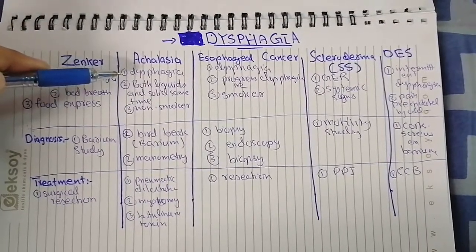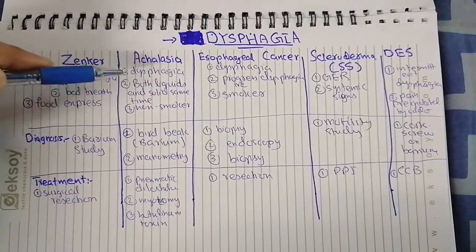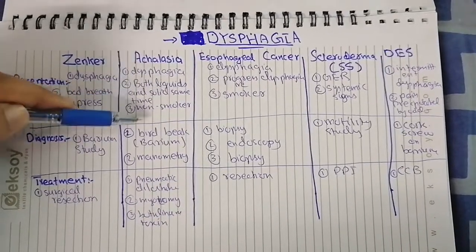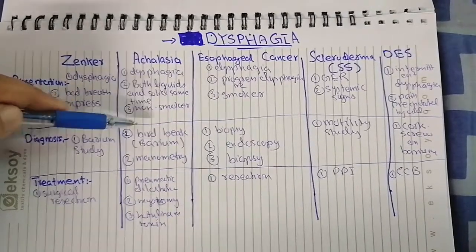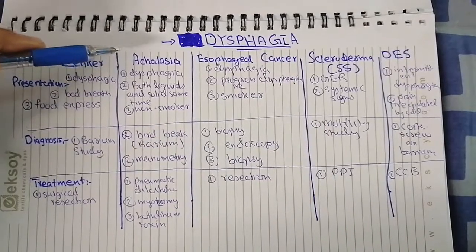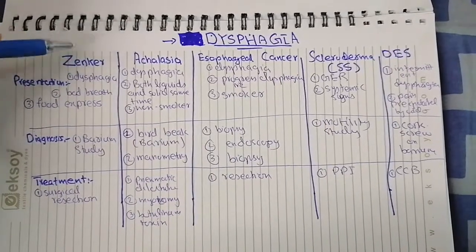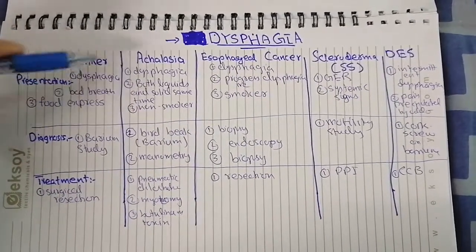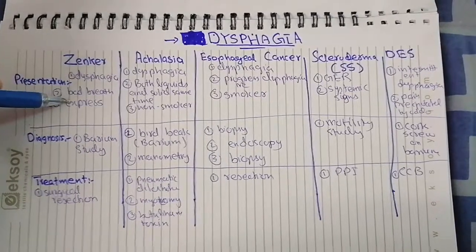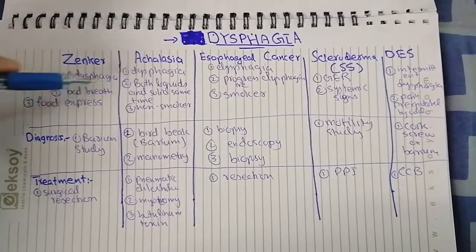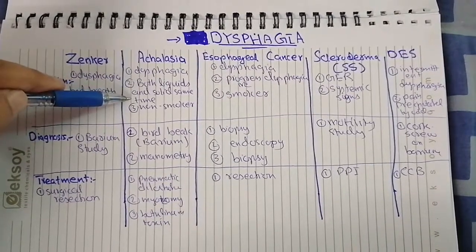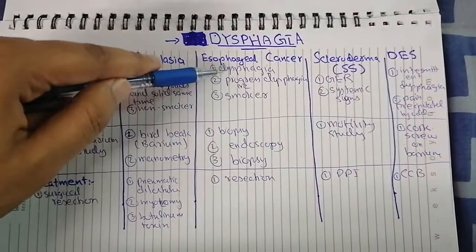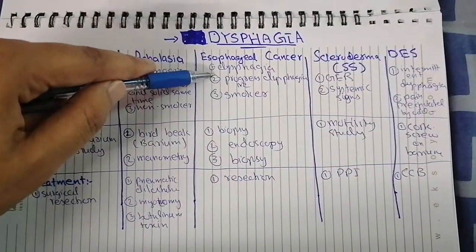No other disease — like achalasia, esophageal cancer, scleroderma, or diffuse esophageal spasms — presents like this. Moving on, achalasia presents with dysphagia that occurs simultaneously for both liquids and solids, and it is associated with a non-smoker. To differentiate Zenker's from achalasia: bad breath is not present in achalasia, and food doesn't express when you press on the neck.